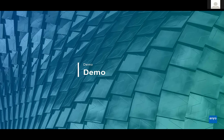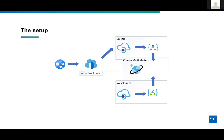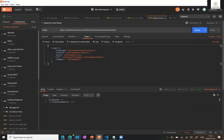Now we're going into the demo part of this. This is the setup for the demo. I have configured an Azure Front Door to use an API management instance in the Eastern US. It calls a logic app, which writes where the message was written, and then saves it to Cosmos. I will then try to make a configuration failover so it fails over to West Europe, and we can see that it writes the same thing into West Europe and you can still access the data.